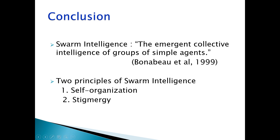In conclusion, in today's lecture we saw what is swarm intelligence and the two principles of swarm intelligence. Swarm intelligence is the emergent collective intelligence of groups of simple agents. The two principles of swarm intelligence are self-organization and stigmergy. This ends today's lecture. Thank you.